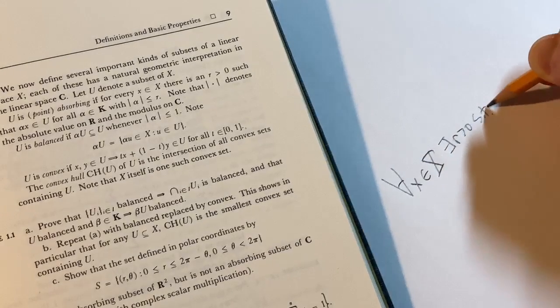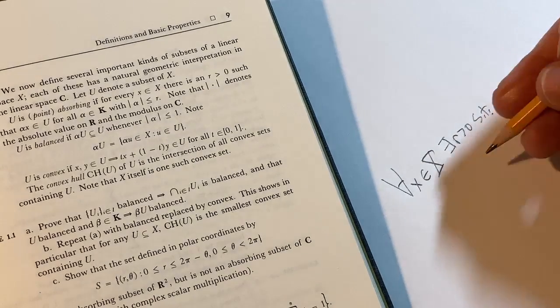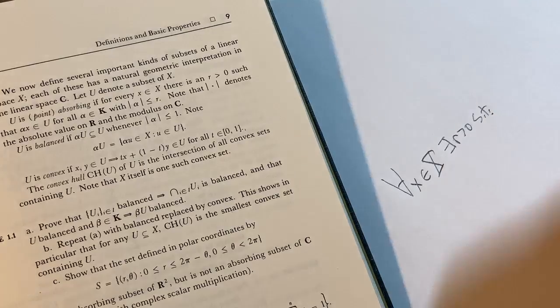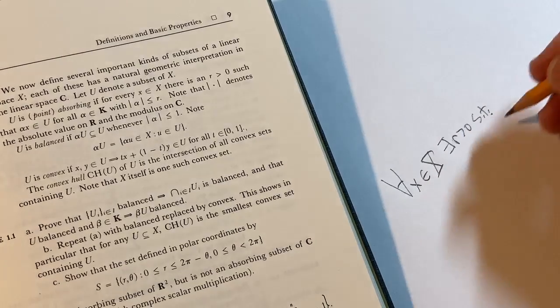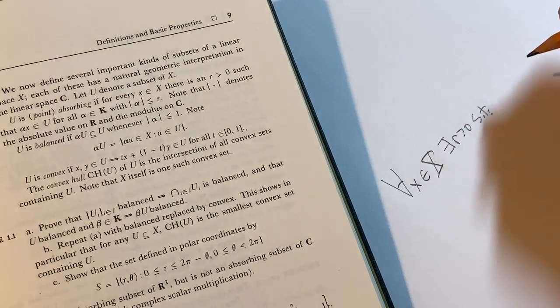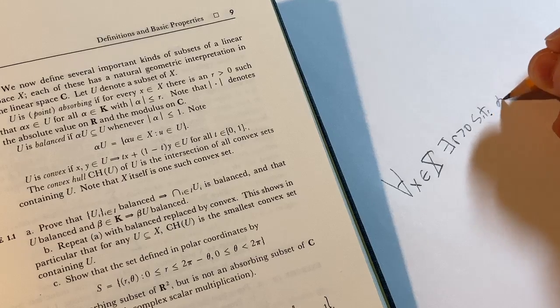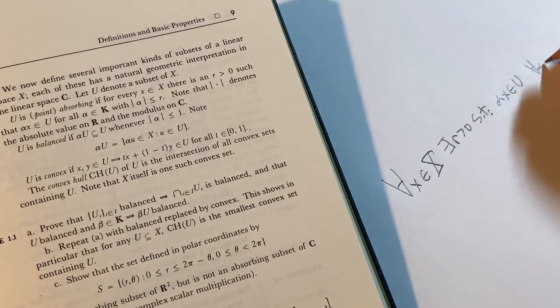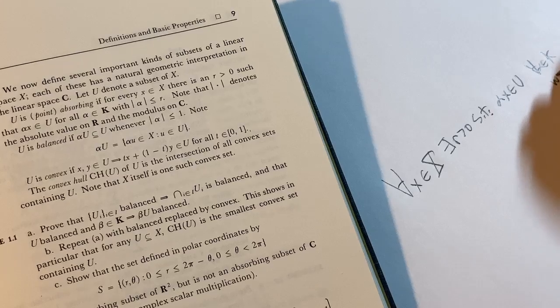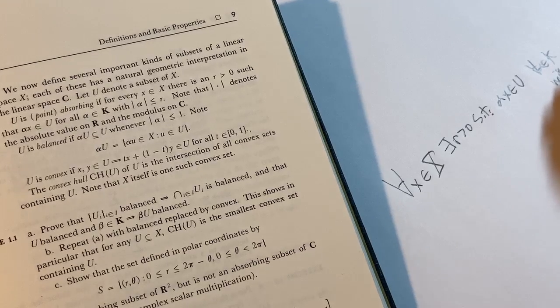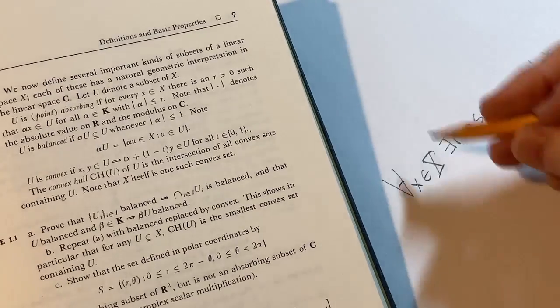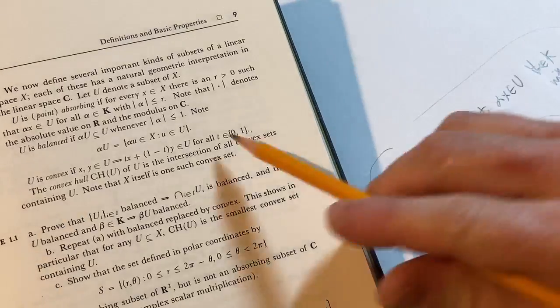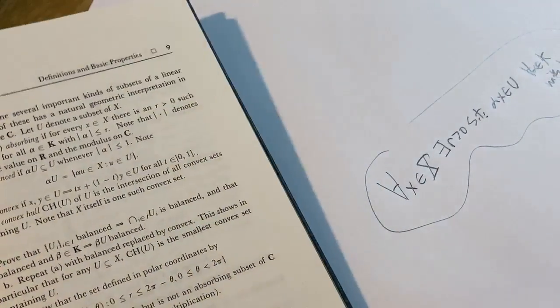So you're trying to write as least as possible so that your hand doesn't get tired. So you can continue learning more math. So, you know, you abbreviate everything such that alpha X is in U. So I'm just going to say alpha X is in U for all alpha in K with the modulus of alpha less than or equal to R. So you see, you've taken that entire sentence there and you've written it down.